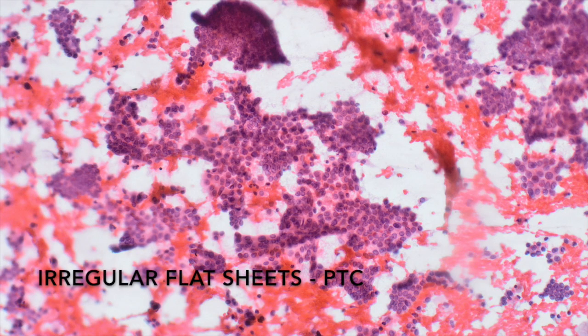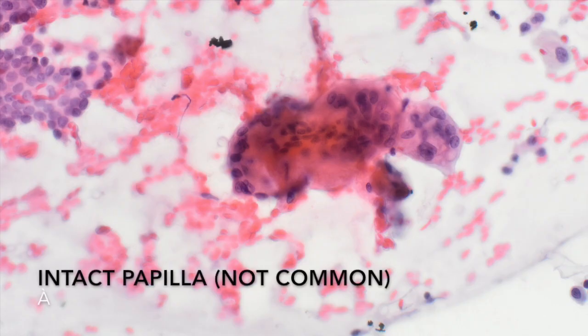In papillary carcinomas, the predominant architecture is irregular sheets with a syncytial appearance, with very few intact papillae, since the epithelium tends to detach easily from the fibrovascular cores.